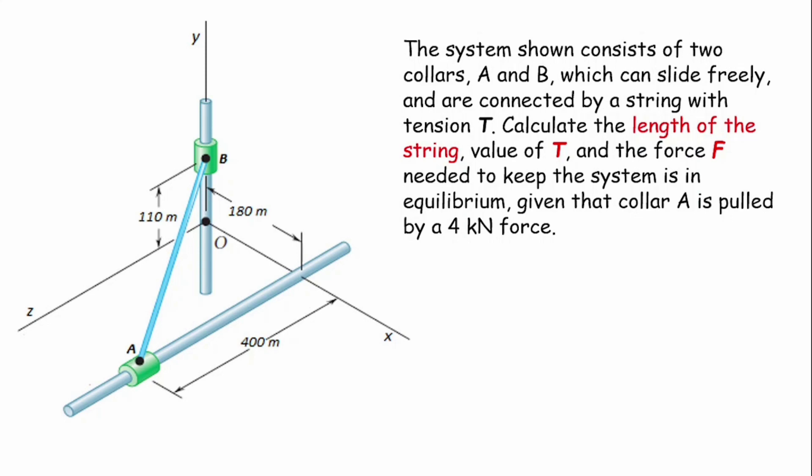The question says the system shown consists of two collars, A and B, which can slide freely and are connected by a string with tension T. We are going to calculate the length of the string, the value of the tension T, and the force needed to keep the system in equilibrium, given that the collar A is pulled by a force of 4 kilonewtons. So we are to calculate for three unknowns: tension, length of the string, and the force F.